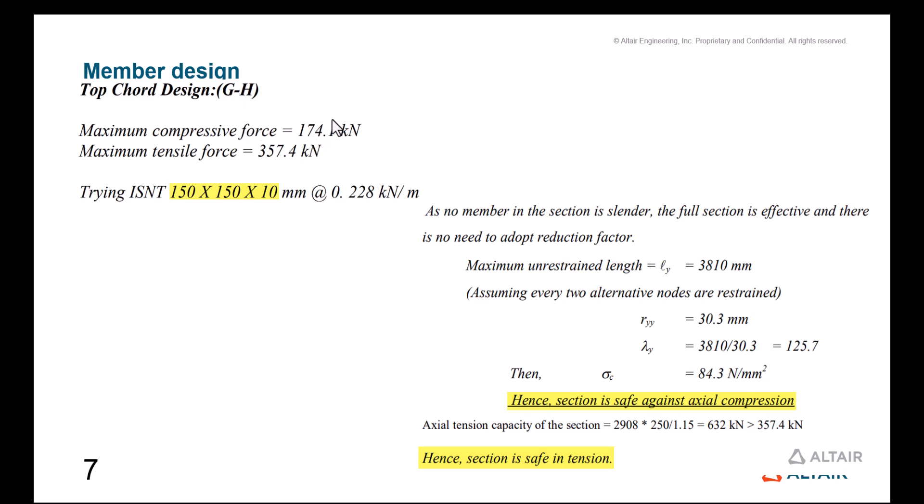When it comes to one of the members in the top chord, member GH, we can see from the results that it has a maximum compressive force of 324.1 kilonewtons and a maximum tensile force of 357.4 kilonewtons. With this in mind, we can try designing this with an ISNT 150 x 150 x 10 millimeters. We can do the checks per IS800:2007. Because no member in the section is slender, the full section is effective, so there is no need to adapt for any reduction factor.